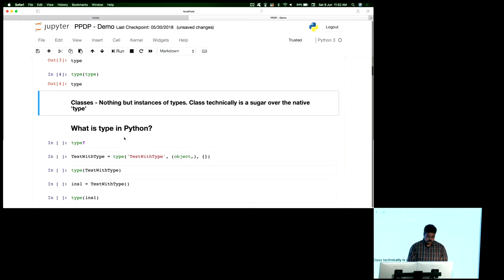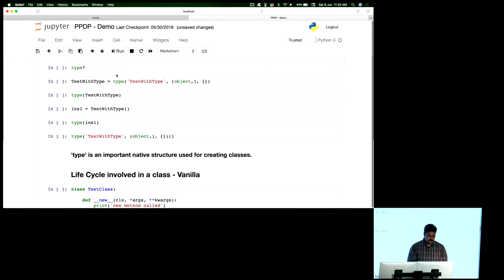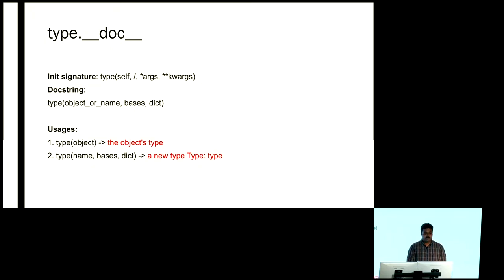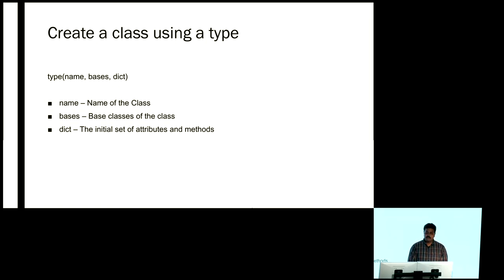So what is type in Python? Looking at the official docs, there is a signature showing I can use it in two ways: I can supply an object to get its type, or I can pass three arguments — name, bases, and dict. The first gives the object's type. The second creates a type, which internally is a class. Name is the class name, bases is a list of base classes to inherit from, and dict is a dictionary of attributes and values available within the class.